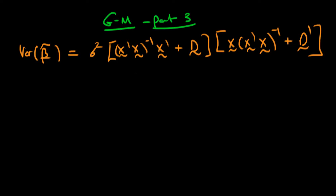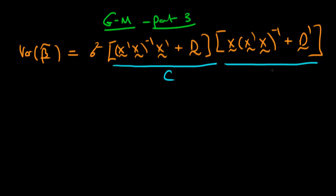Welcome to the final part of our proof of the Gauss-Markov theorem in matrix form. At the end of the last video we had that the variance of beta tilde was equal to some matrix C times its transpose C primed, all pre-multiplied by sigma squared.